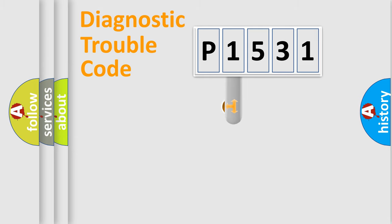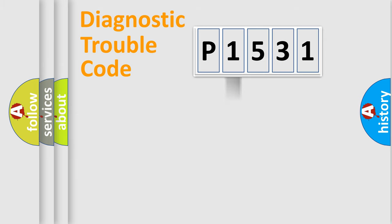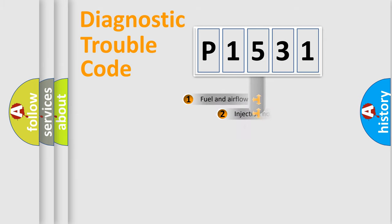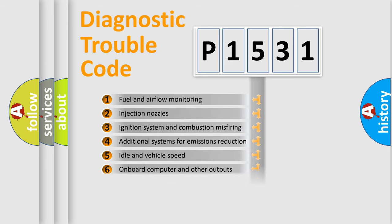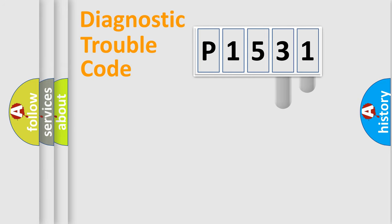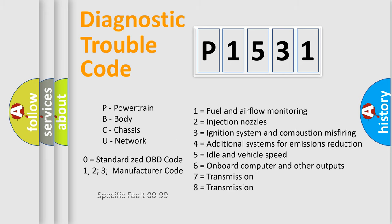This distribution is defined in the first character of the code. If the second character is expressed as zero, it is a standardized error. In the case of numbers 1, 2, or 3, it is a manufacturer-specific error expression. The third character specifies a subset of errors. The distribution shown is valid only for the standardized DTC code, and only the last two characters define the specific fault of the group. Note that such a division is valid only if the second character is expressed by the number zero.